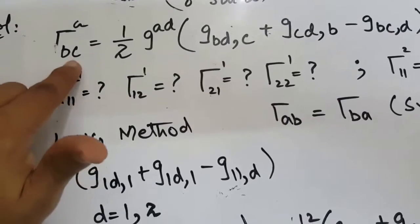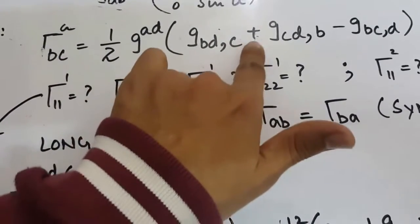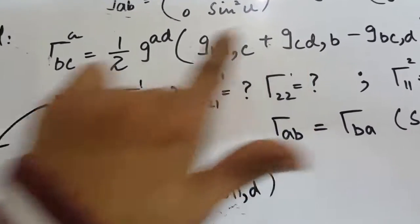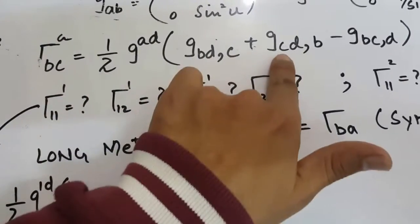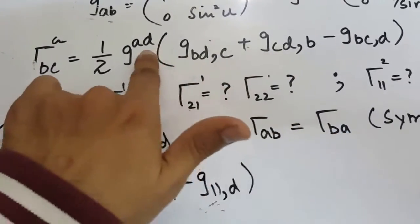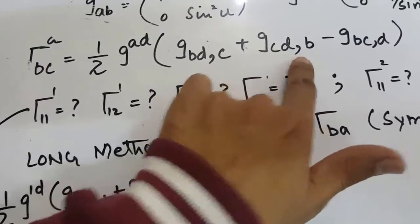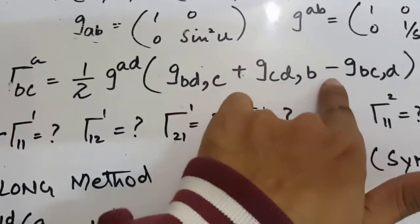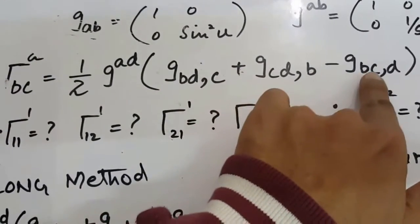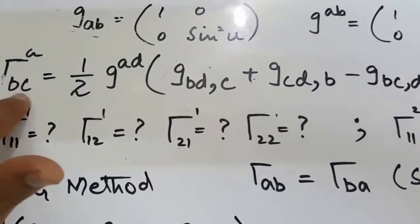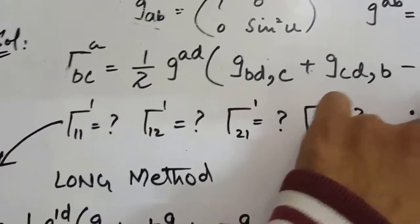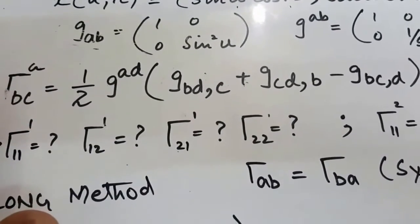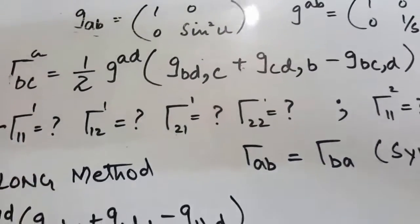Continuing the pattern: write C first, then the dummy index D second, comma, and the remaining index B. Then put a negative sign, and for the last term write both B and C together with the dummy index D. This completes the full formula for calculating Christoffel symbols.